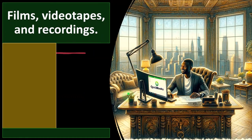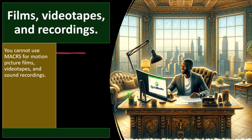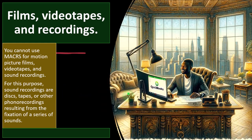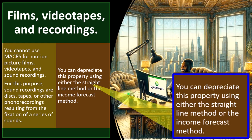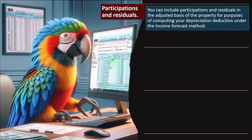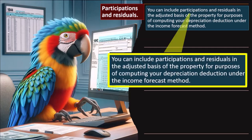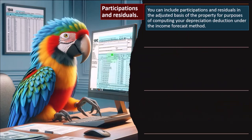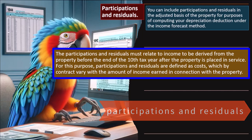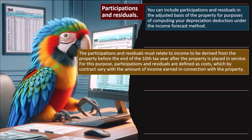Films, videotapes, and recordings: you cannot use MACRS for motion picture films, videotapes, and sound recordings. For this purpose, sound recordings are discs, tapes, or other phonograph recordings resulting from the fixation of a series of sounds. You can depreciate these properties using either the straight-line method or the income forecast method. You can include participations and residuals in the adjusted basis of the property for purposes of computing your depreciation deduction under the income forecast method. Participations and residuals must relate to income to be derived from the property before the end of the 10th tax year after the property is placed in service, and are defined as costs which by contract vary with the amount of income earned in connection with the property.